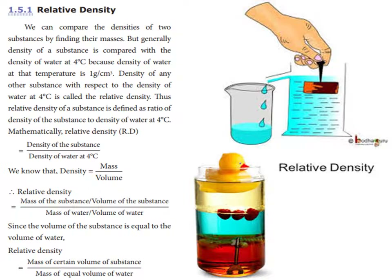So we can compare the densities of two substances by finding their masses. Substances are compared to the density of water at 4 degrees Celsius, because the density of water at that temperature is 1 gram per centimeter cube. All densities are compared to the density of water at 4 degrees Celsius. So we can compare the density of any other substance with respect to the density of water at 4 degrees Celsius — this is called Relative Density.